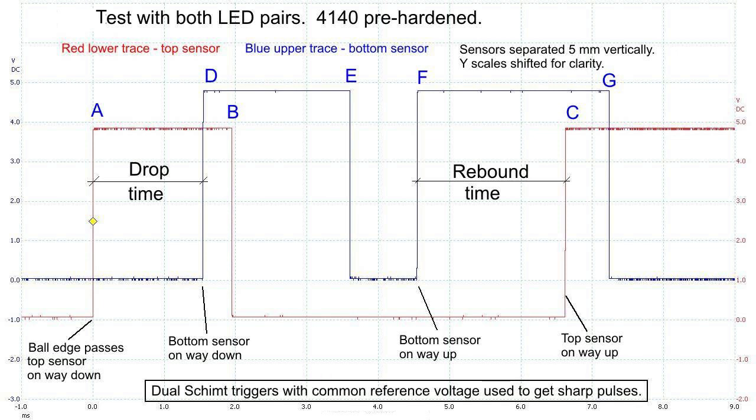As we travel along in time, the next event we want is at point D, which is when the ball passes the lower sensor. Then the ball will bounce and start coming up again, but it will be the lower sensor that will detect it first. That is at point F, as the ball passes the lower sensor after its first bounce. Then it will pass the top sensor at point C on its way up.